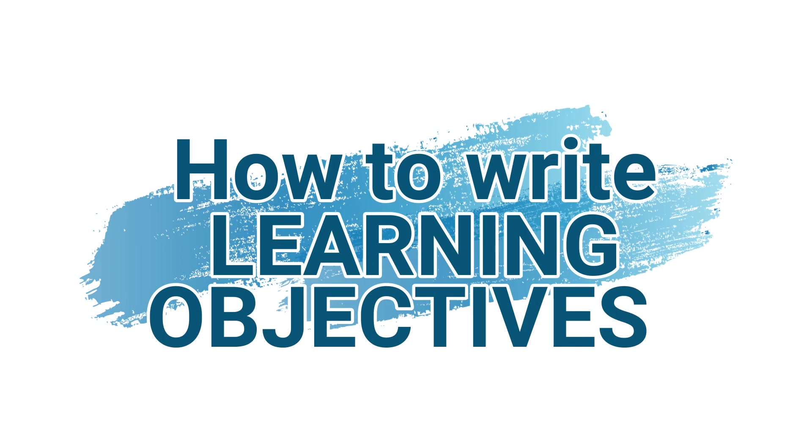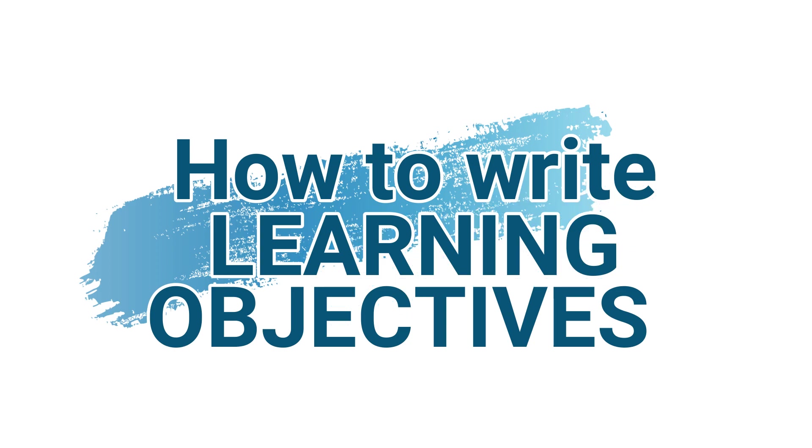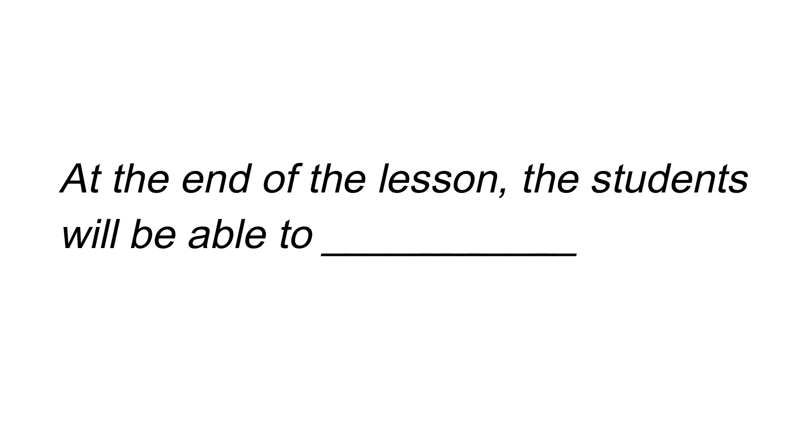But how do you write learning objectives? As part of the planning, you need to decide what your students need to be able to do after they have learned something you have taught. Beginning your planning with learning objectives ensures that tasks and activities are appropriate and will help your students achieve their objectives. A good learning objective fills in the sentence: 'At the end of the lesson, the students will be able to ___.' You must be specific and use strong verbs that define student performance.